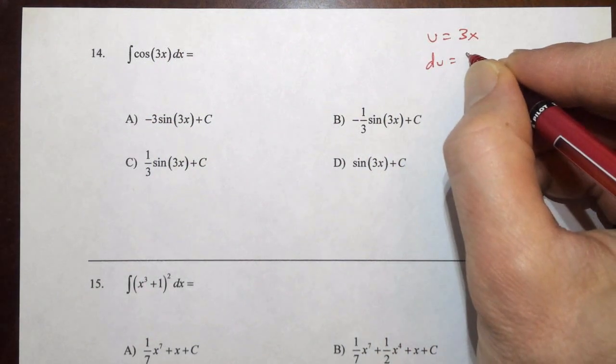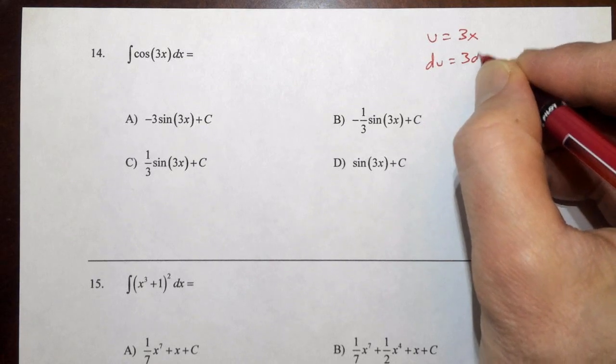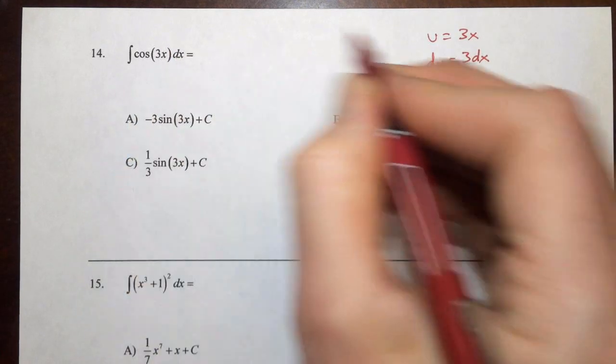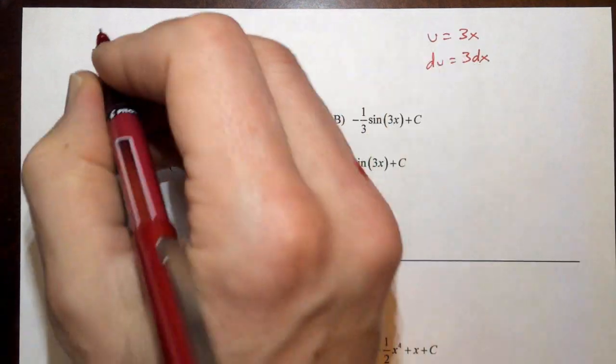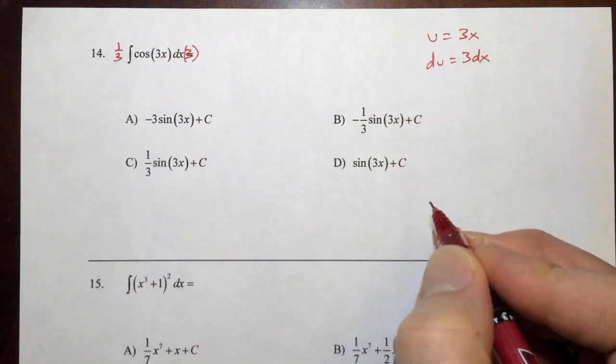The derivative of 3x is 3, so du is 3 dx. We have the dx, but we don't have the 3. So we're going to put that in, which means we need the corresponding one-third outside.